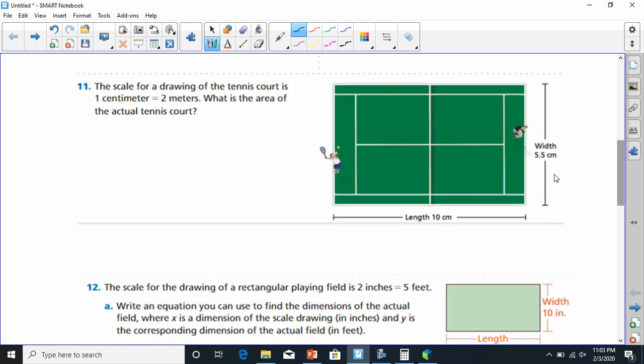Going on number 11, it says the scale for the drawing of the tennis court is 1 centimeter equals 2 meters. And it says, what is the area of this tennis court? First of all, we got 10 centimeters down here. So, the length is going to be 10 centimeters.